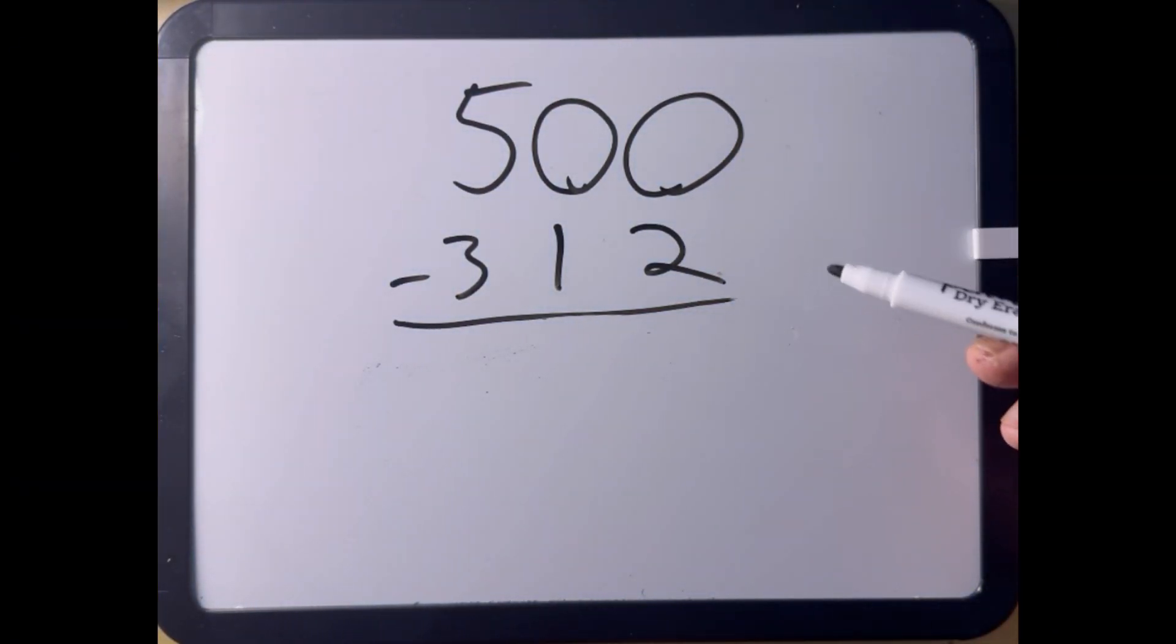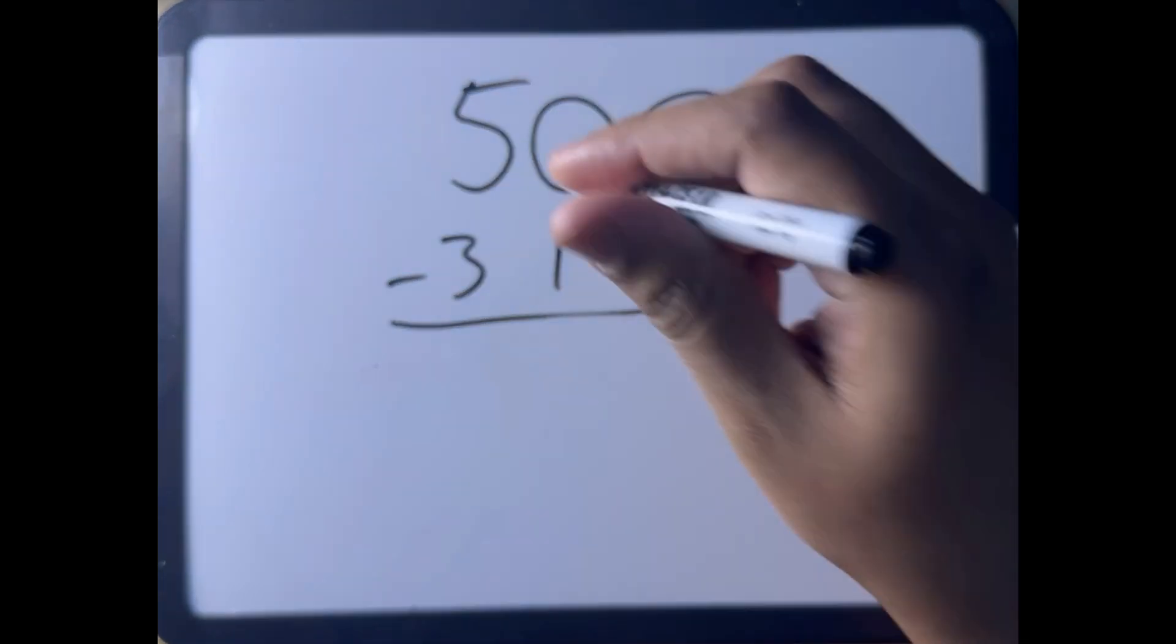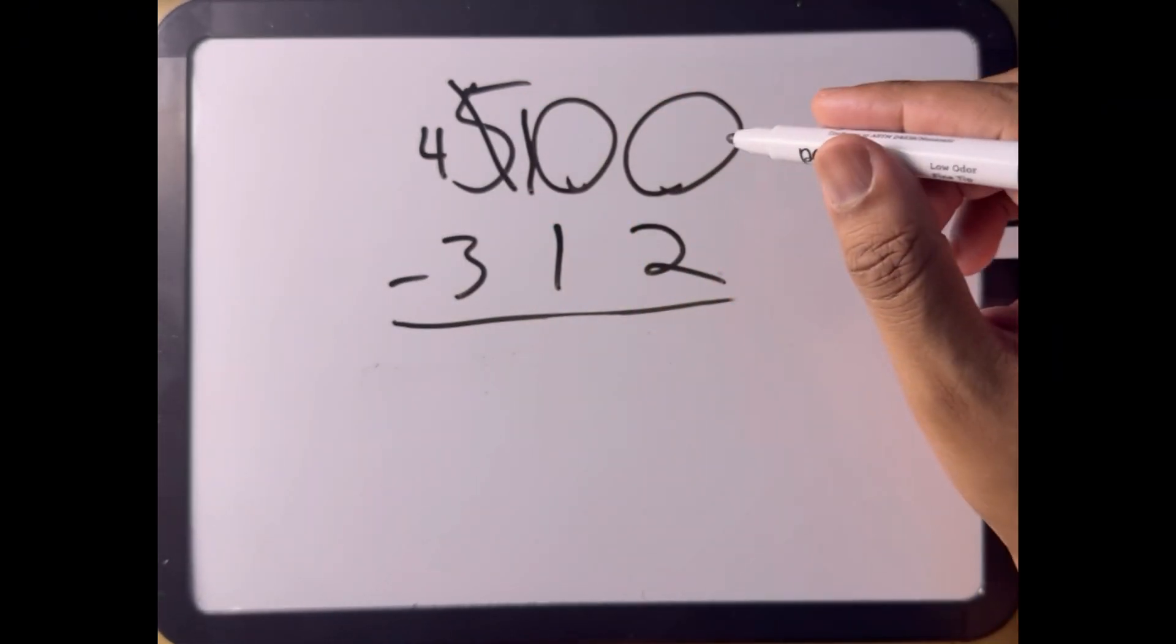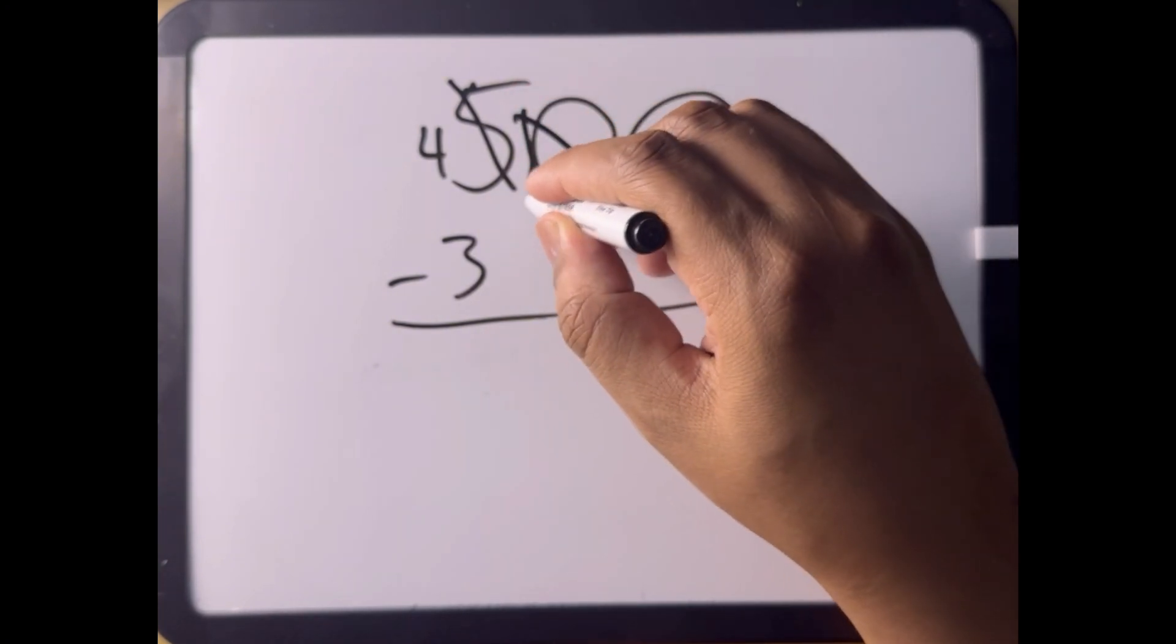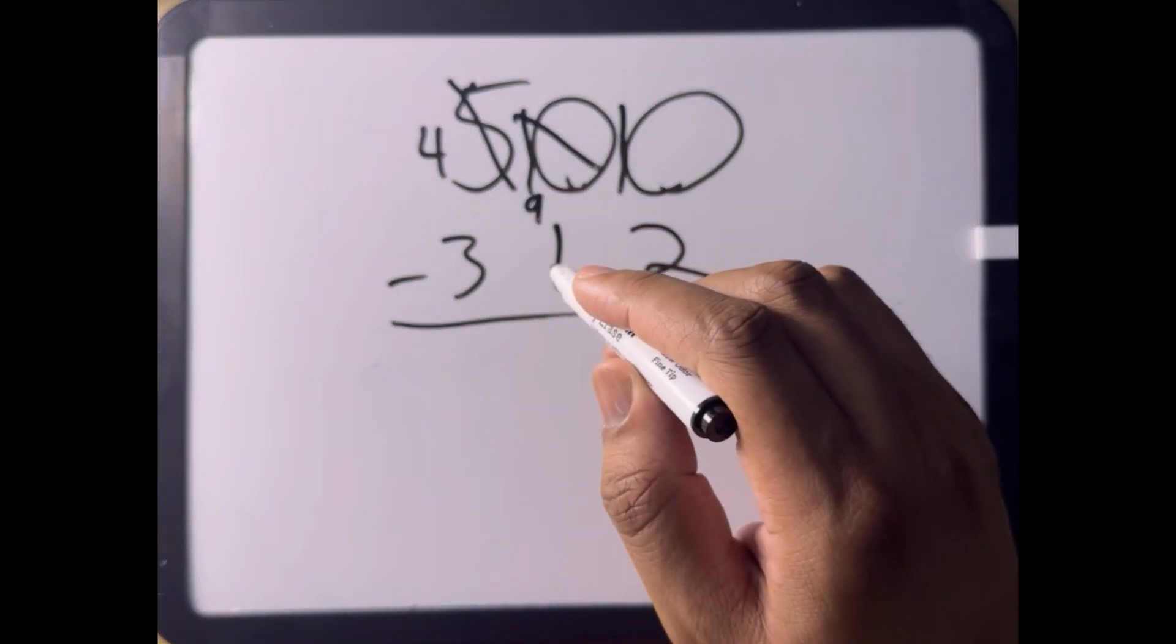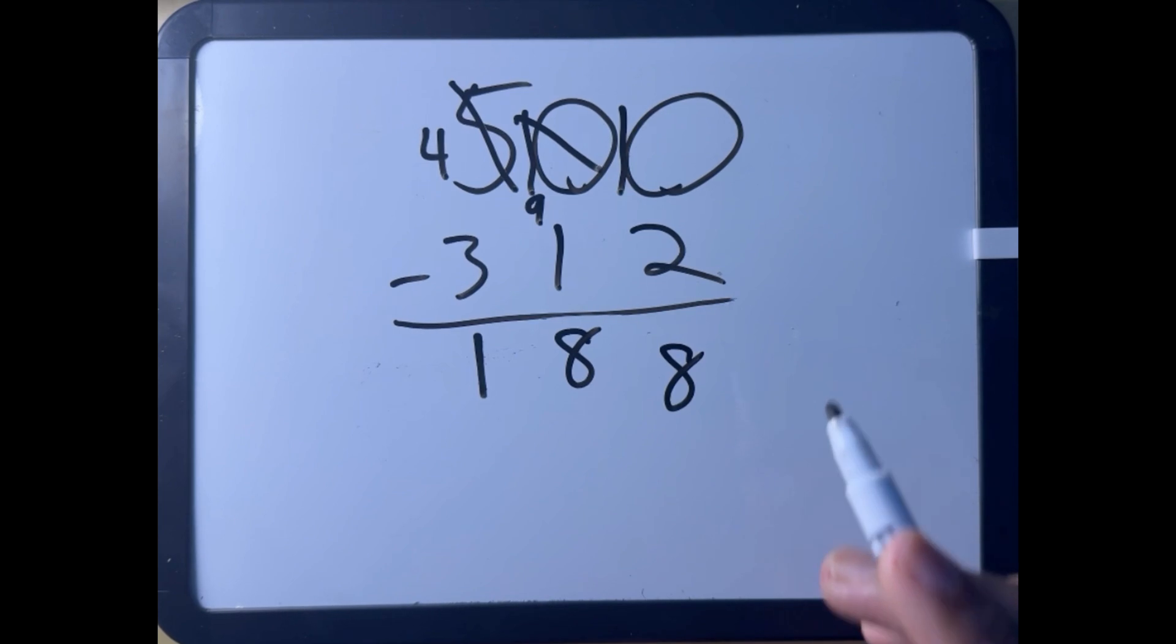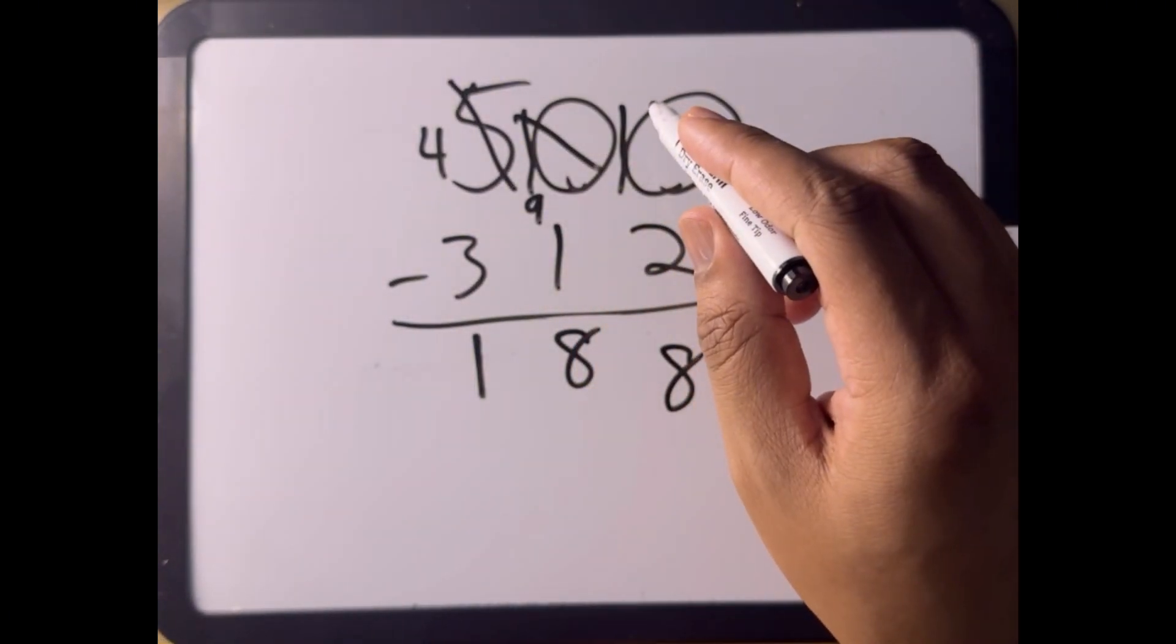So we have 500 minus 312. This is how we set up our equation. You see that we can't subtract 0 from 12 or 0 from 1. So we have to borrow from the hundreds place and the tens place to convert these numbers. If we borrow from 5, that becomes 4 minus 3, and this becomes 10. But now we need to borrow from 10 to add to this place. So this becomes 9, and then this becomes 10. So 10 minus 2 is 8, 9 minus 1 is 8, 4 minus 3 is 1. Our answer to 500 minus 312 is 188. Because we have to borrow all the way from the hundreds place, convert the tens place and the ones place into a number that can be subtracted from.